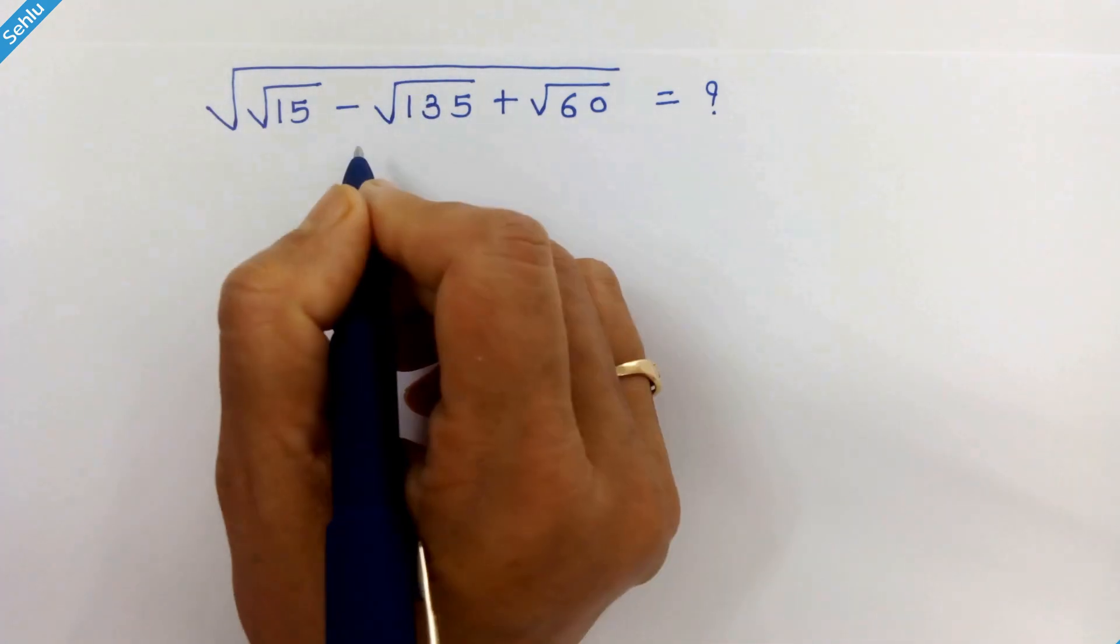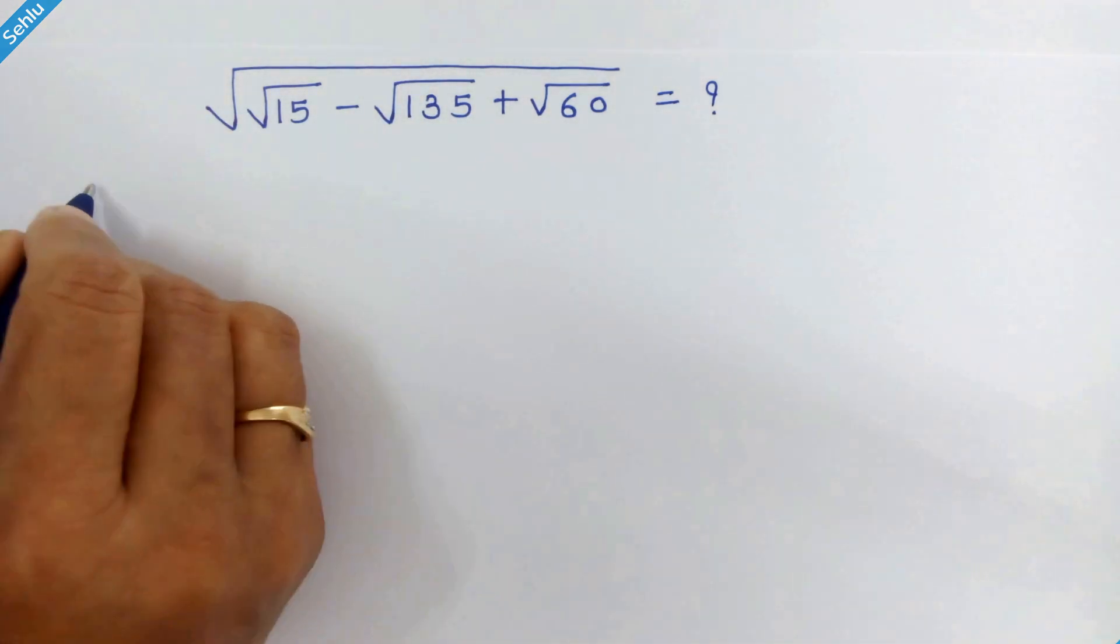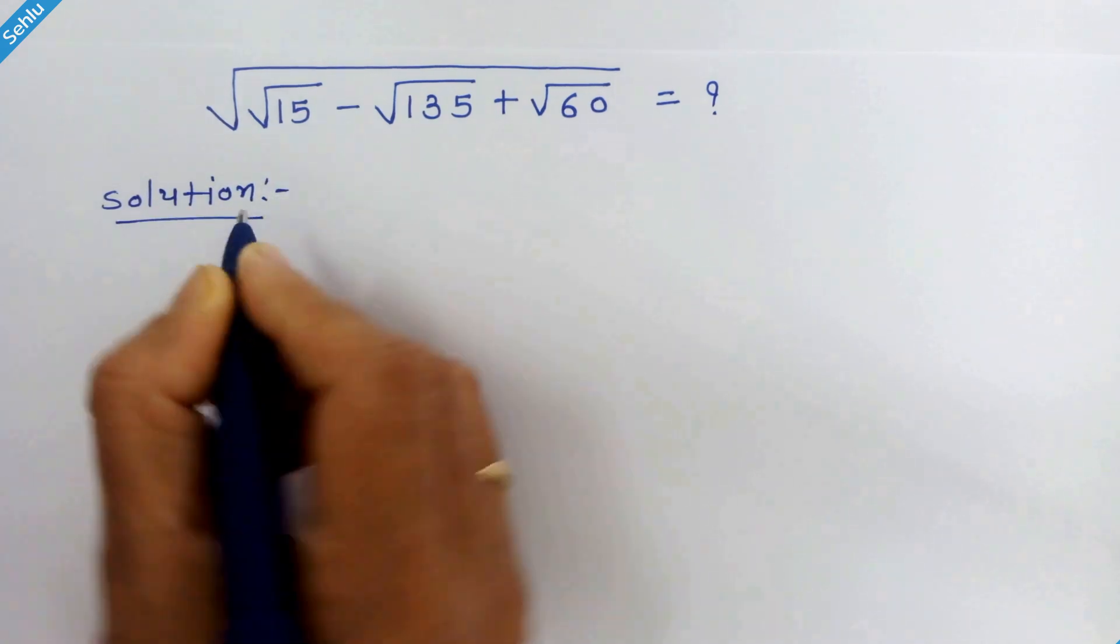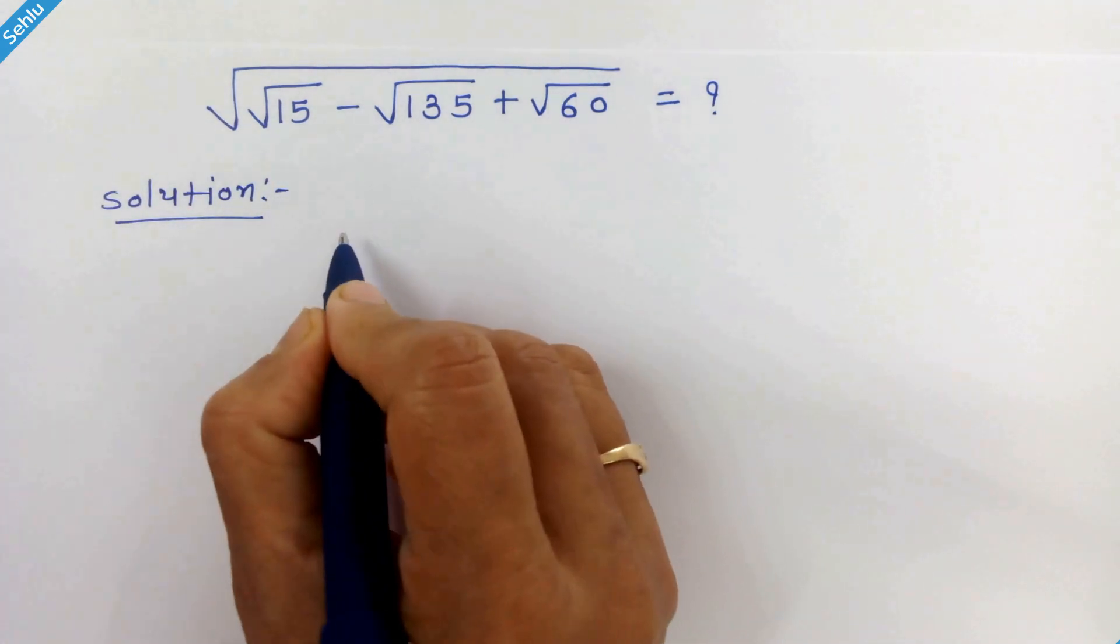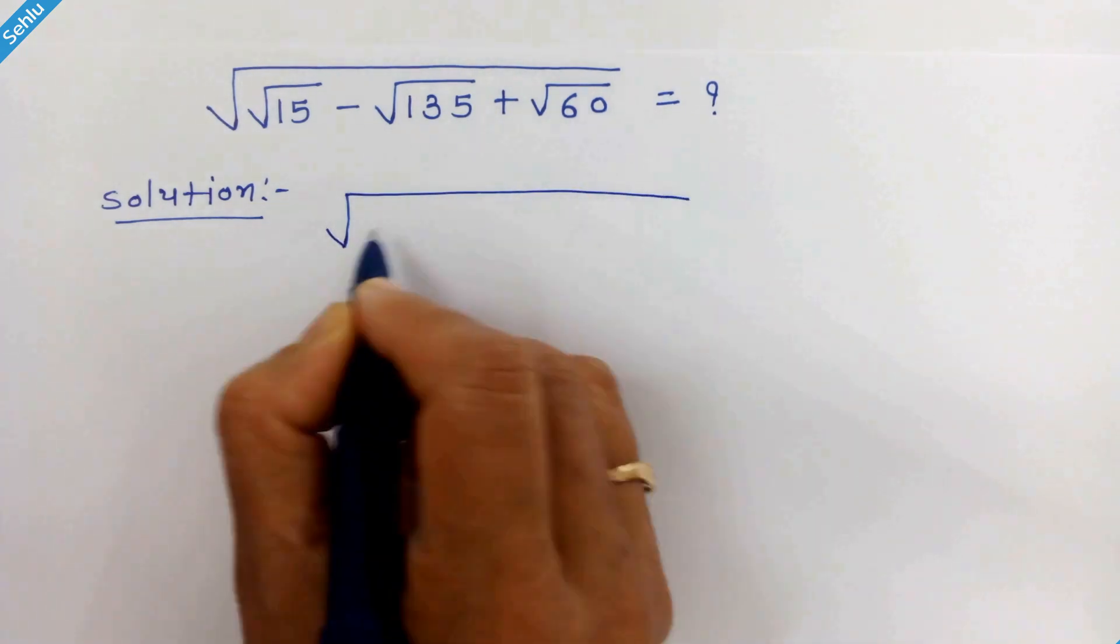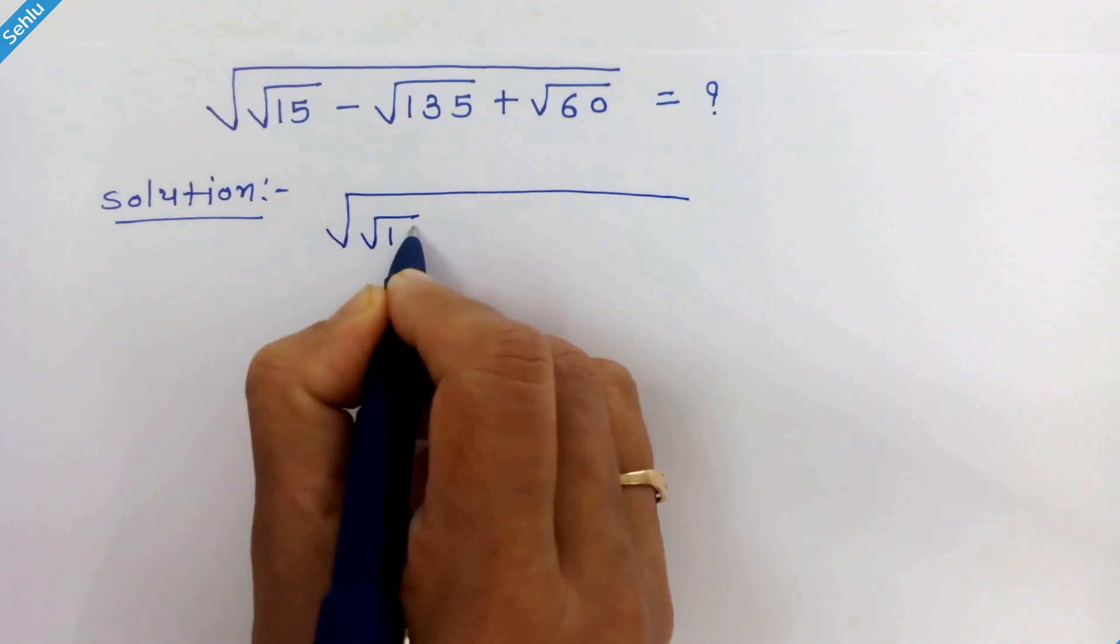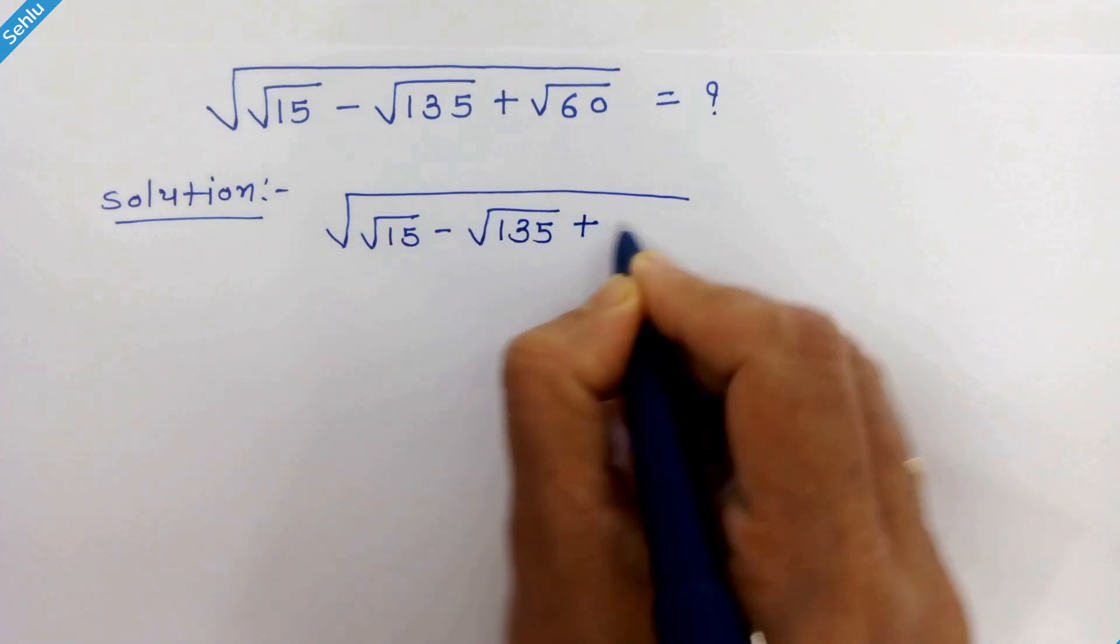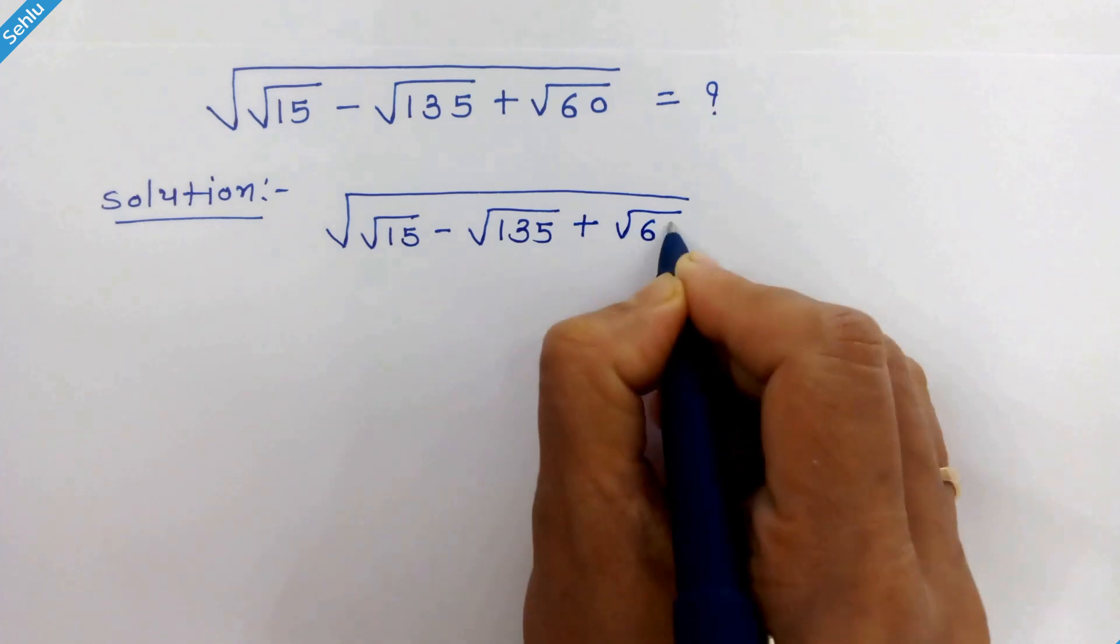Hello friends. So how do we solve this problem? Let's see. Our question is square root of square root 15 minus square root of 135 plus square root 60.